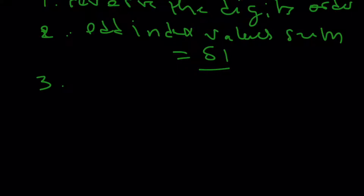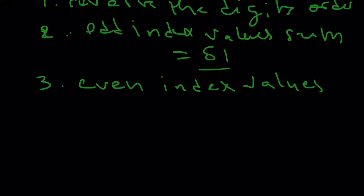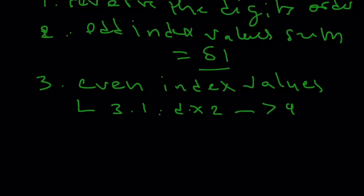The third step is to take the even-index values. So every even-index value in the reversed digits — the first thing we do is multiply each digit by two. So the digit, let's call it D, we multiply it by two. And if it's greater than nine, which means it has two digits, we do a sum of those individual digits. So if we get 18, we get one and eight and we add them together and get nine. If it's just a single digit, we just multiply it by two and take that value.